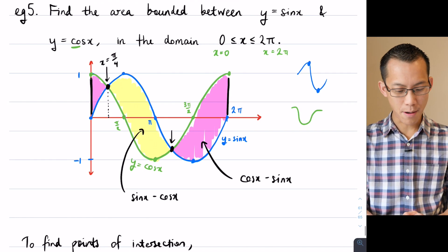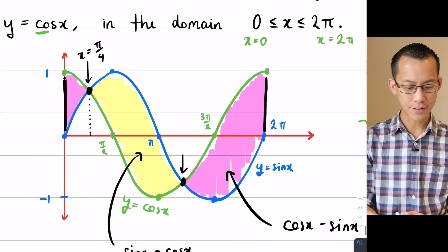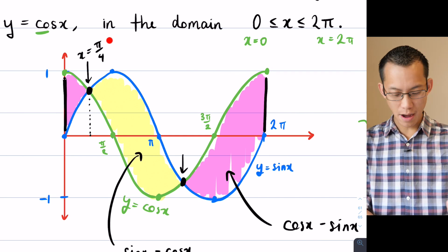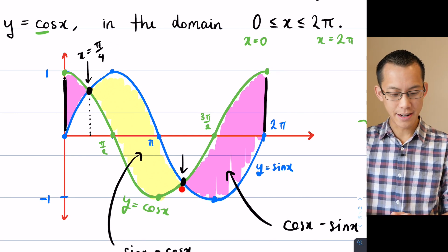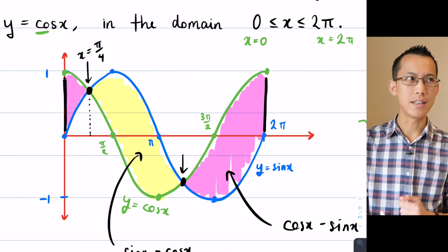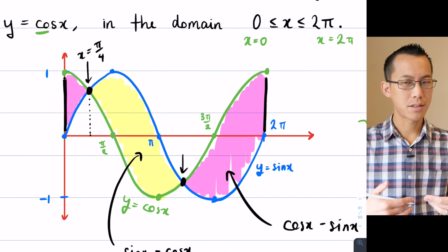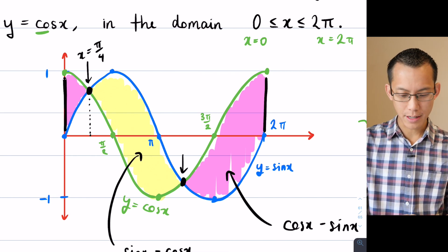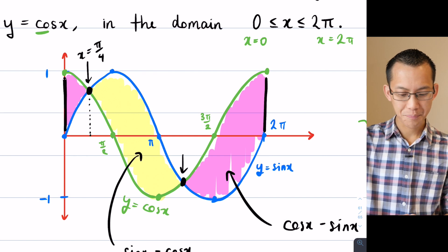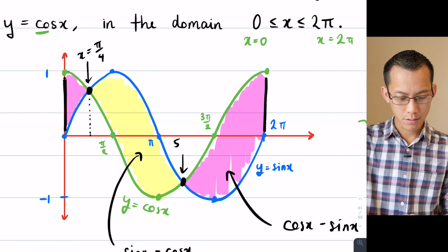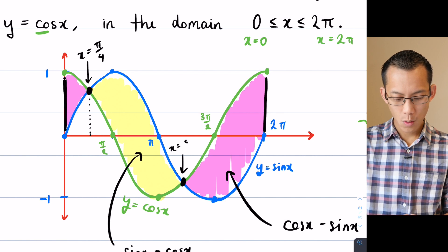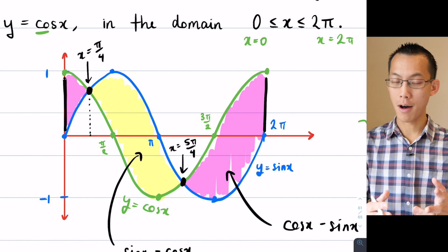Alright, so now I've got π on 4 over there in the top left-hand corner, and then my 5π on 4 is over here. If you think about it, 5π on 4 is 1 and a quarter lots of π, so 5π on 4, x equals 5π on 4, will just be a little bit past π.